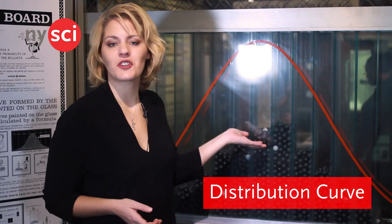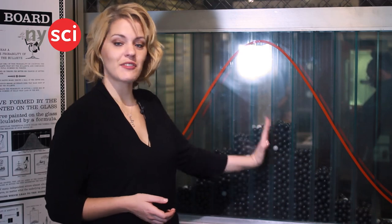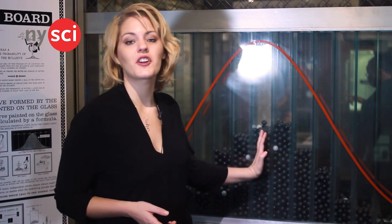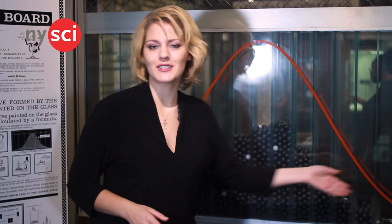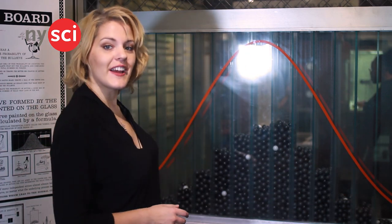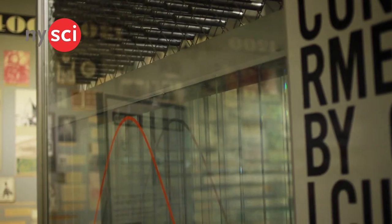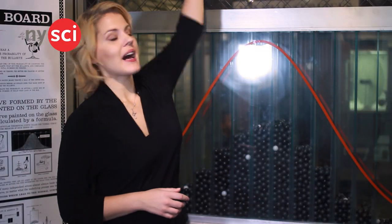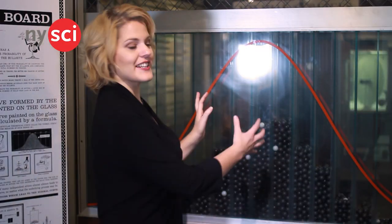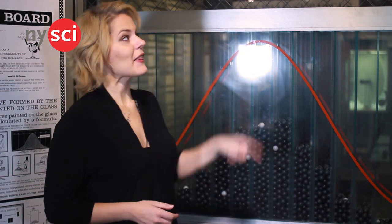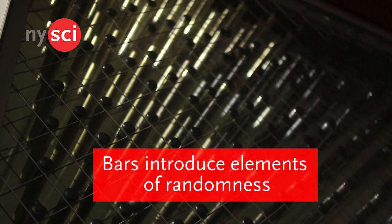A normal distribution curve shows us that most balls are going to land in the middle. The chances of a ball landing further away from the middle become smaller and smaller, so you can see fewer balls at the far ends of the curve. Balls are dropped from the top and they fall down to the bottom. If there were no bars in the middle, they would all fall straight down and land in a big stack in the middle, but these bars introduce elements of randomness.